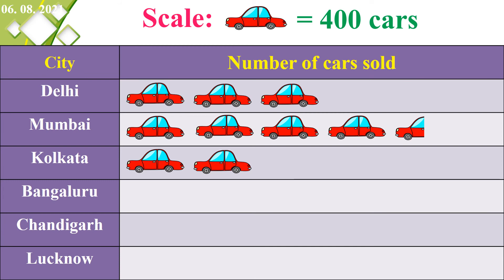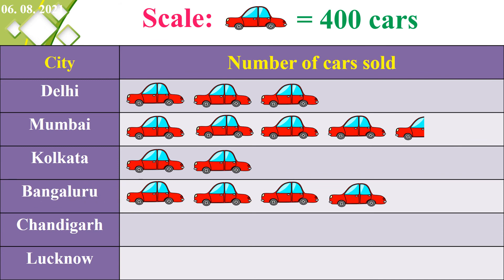Next, Bangalore sold 2,200 cars. 2,200 divided by 400 gives a quotient of 5 and a remainder of 200. So we draw 5 full cars and 1 half car: 1, 2, 3, 4, 5, and a half car. Because 5 into 400 equals 2,000, and 2,000 plus 200 equals 2,200.